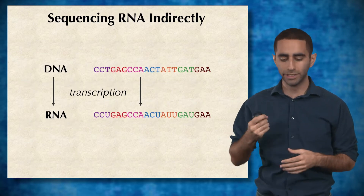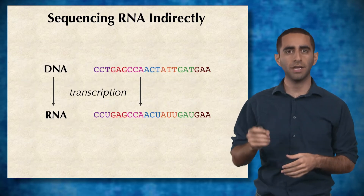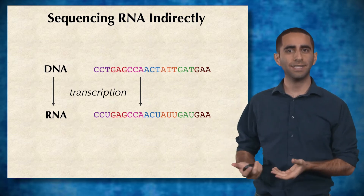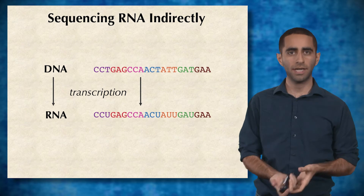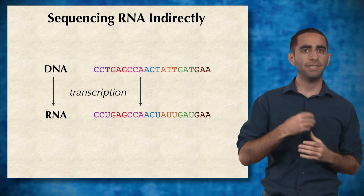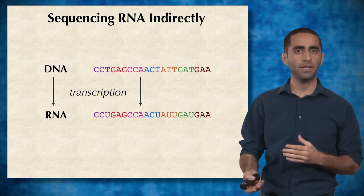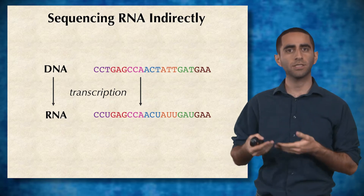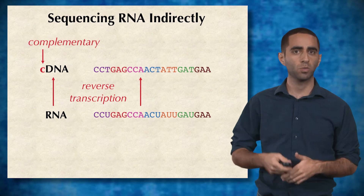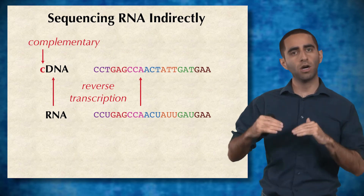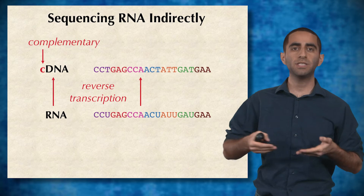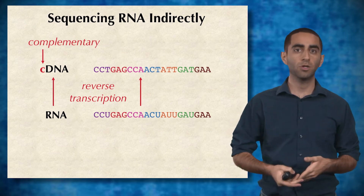Unfortunately, there's no way to actually sequence RNA directly at the moment. However, we can hack existing DNA sequencing techniques to sequence RNA indirectly. Recall that DNA to RNA conversion is a process called transcription. It turns out there's a similar process called reverse transcription, in which RNA is converted back into DNA — or specifically, complementary DNA, or cDNA.